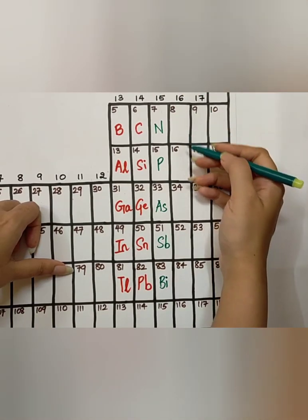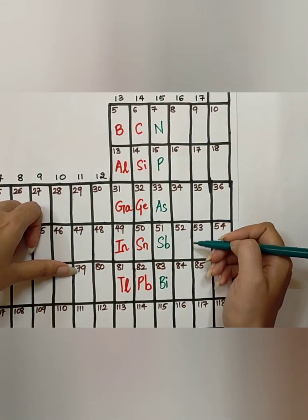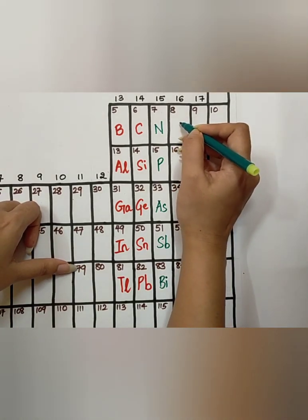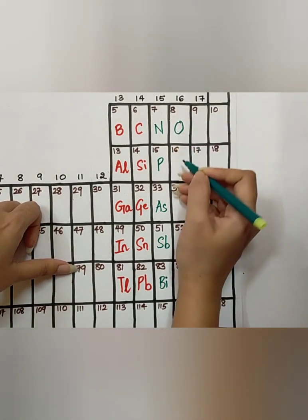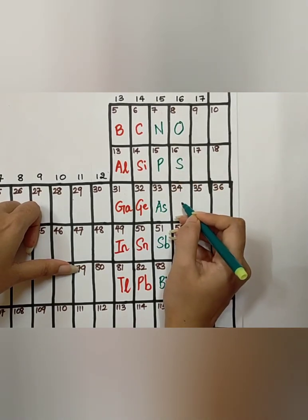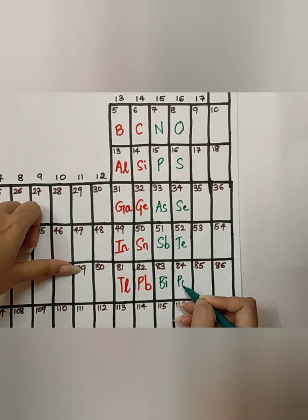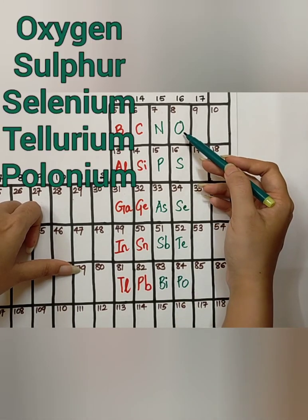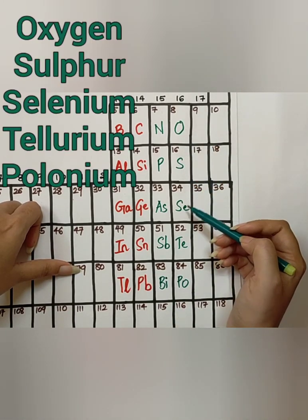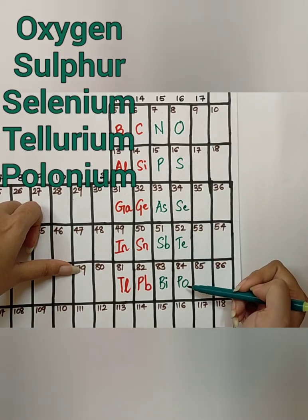Next we have the group 16 elements, starting from Oxygen. So you have to remember, O, Sun, C, Tels, Pot. Oxygen, Sulphur, Selenium, Tellurium, Polonium.